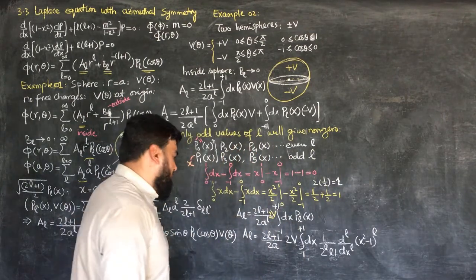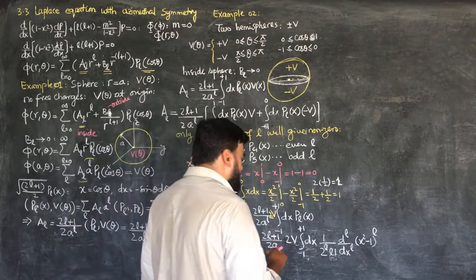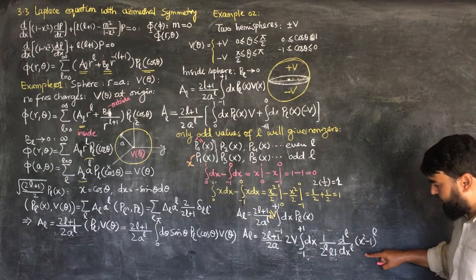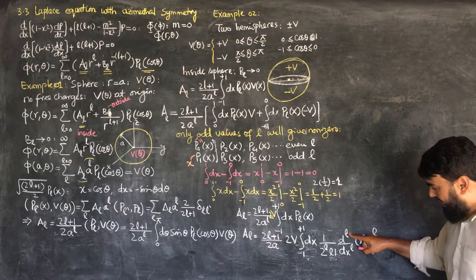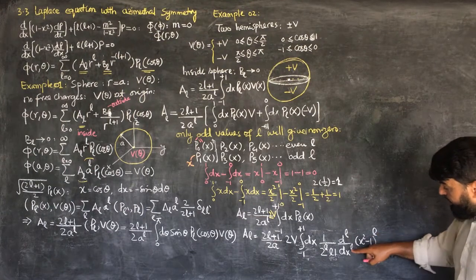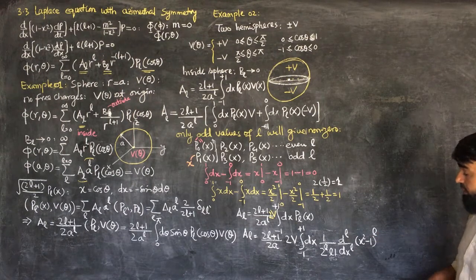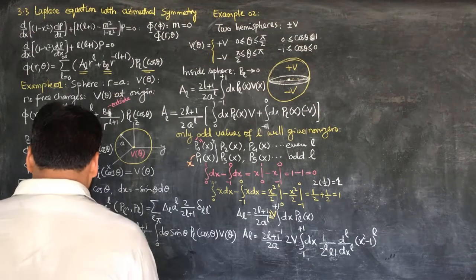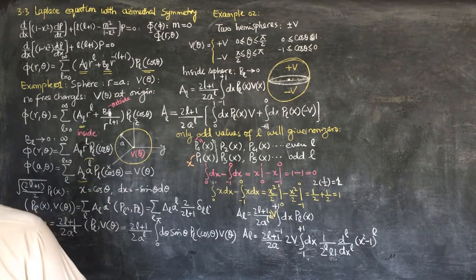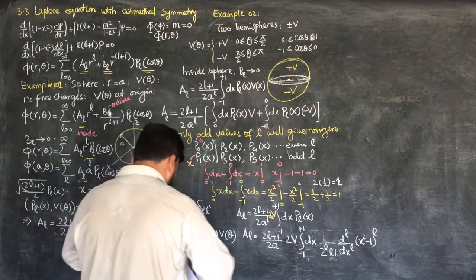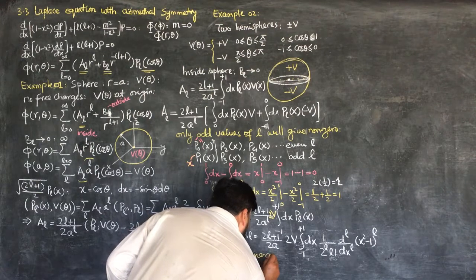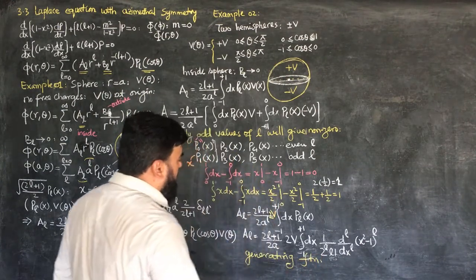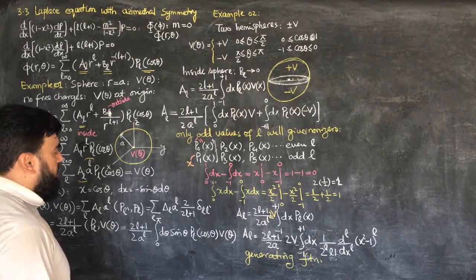Now we will have to solve this integral. As I know from here, this integral is not a constant — this differential has power L, and the X power is 2L — so it means it will be a variable, and it is a hard integral to solve. So we will have to use another tactic, and that tactic we will use because of the generating function.